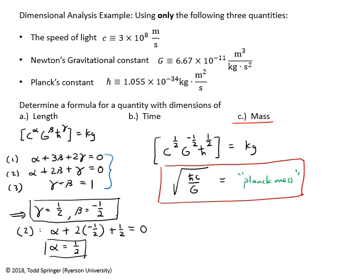The numerical value of the Planck mass is not so ridiculously small as the Planck time and Planck length — it's about 2.2×10⁻⁸ kilograms, which is a few micrograms. A grain of sand is not that much bigger than the Planck mass. This more systematic way of writing a general equation with exponents and solving for those exponents could be done for parts A and B as well, or any general problem where you're trying to combine constants in a certain way. I hope this problem has been useful for working with units.